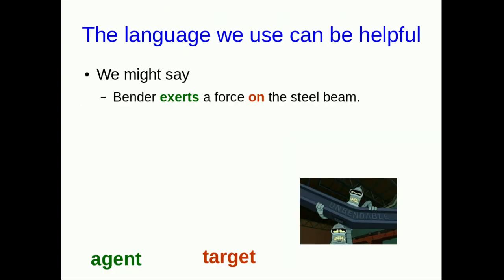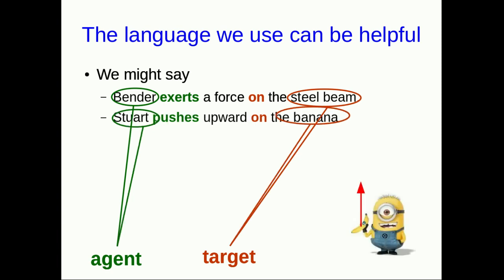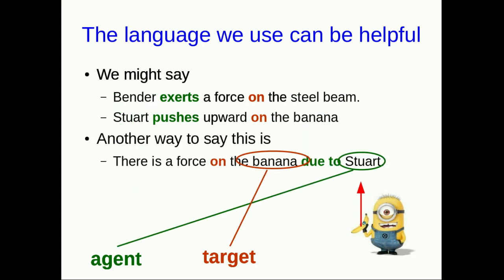Being aware of the language we use can be helpful — there are a lot of cues from the way forces are described. If we say 'Bender exerts a force on the steel beam,' Bender is the agent and the steel beam is the target. Similarly, 'Stuart pushes upward on the banana' — Stuart is the agent, the banana is the target. We could also say 'there is a force on the banana due to Stuart' — the banana is the target, Stuart is the agent.